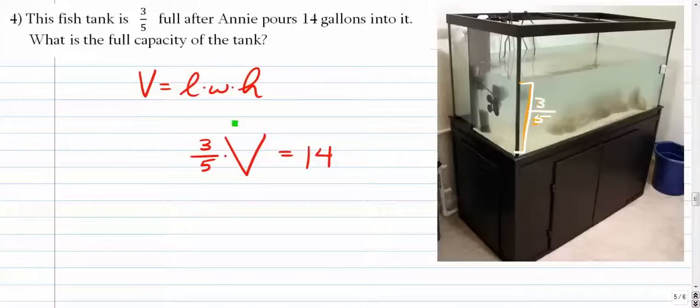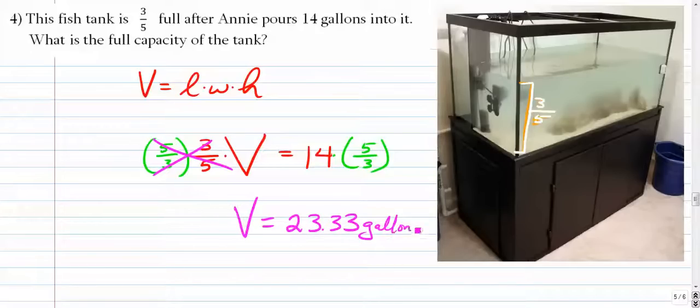Simple algebra will tell you to get rid of a fraction as a coefficient. All you want to do is multiply both sides by the reciprocal, and what that's going to do is give you cancellations here. So V is equal to 14 times five-thirds. 14 times five-thirds gives you 23.33 gallons. That would be the full capacity of the fish tank, or you can check that to make sure that everything kind of fits together. Three-fifths of the whole thing should be 14, and when you check that, it actually works out perfectly.